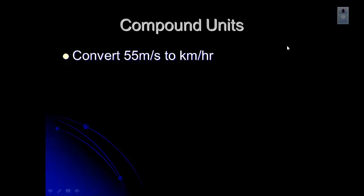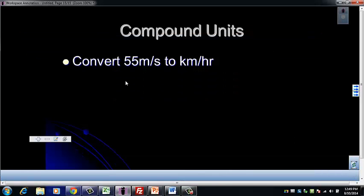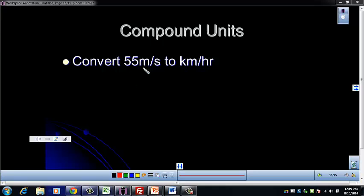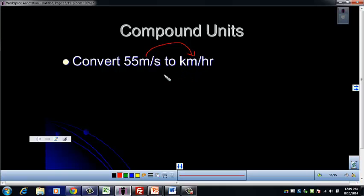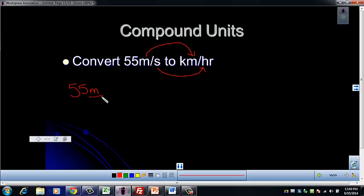We're going to look at how to convert a compound unit. In this example, we're looking at 55 meters per second and we want to convert that to kilometers per hour. The first thing we want to do is figure out which unit in our beginning number is going to convert to which desired unit. Meters and kilometers have the same base unit, so meters will become kilometers. And then we're going to convert seconds to hours — as two separate conversions. With conversion factors, it's all about where the units go. So we've got 55 meters over seconds — seconds on the bottom, meters on top.